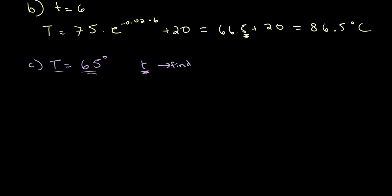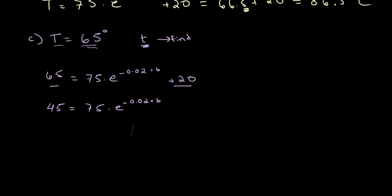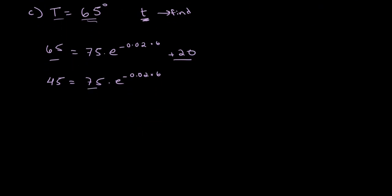This gives us 65 is equal to 75 times e to the power of negative 0.02 times 6 plus 20. So we can subtract 20 from both sides, giving us 45 is equal to 75 times e to the power of negative 0.02 times 6. Let's bring the 75 over, so 45 over 75 is equal to e to the power of negative 0.02 times 6. And I believe 45 divided by 75 is equal to 0.6.